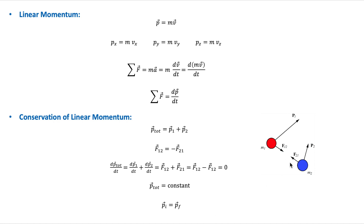These forces are complex functions of the collision time, so it is difficult to find their exact form, which would make it difficult to use Newton's second law to solve such problems. So new concepts known as momentum and impulse were introduced, and these concepts enable us to analyze problems that involve collisions as well as many other problems.